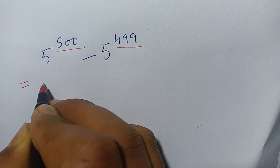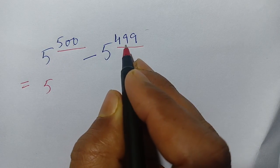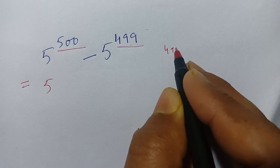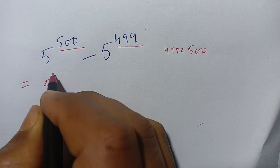We have to solve this. 5 power 500 can be written in terms of 499 because 499 is less than 500. Thus, 5 power 500 can be written as 5 power 499 plus 1.